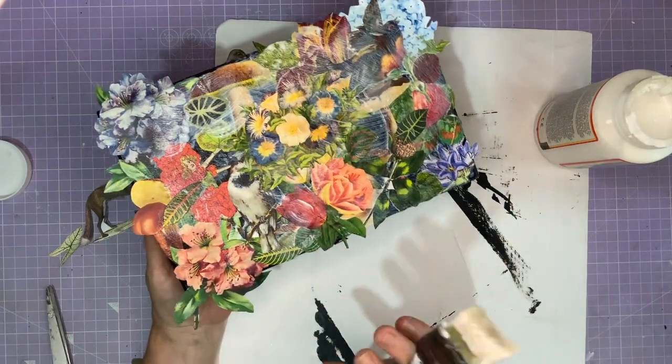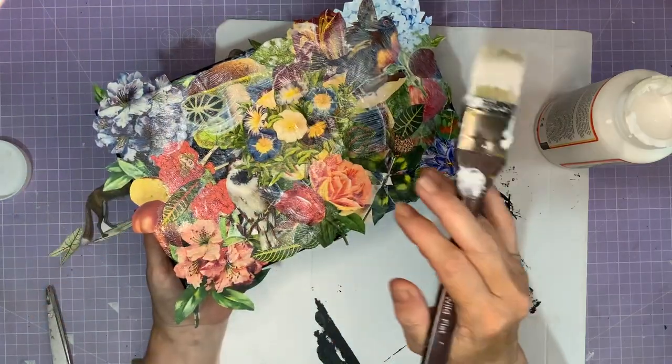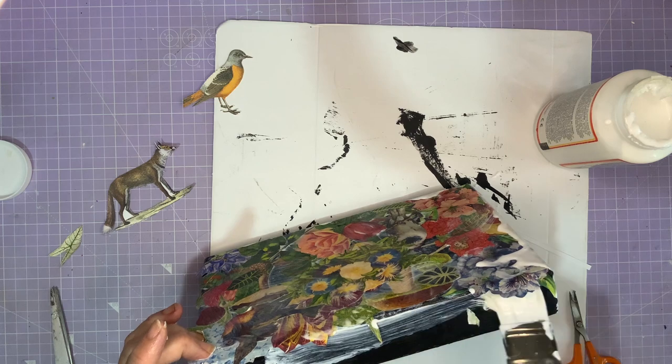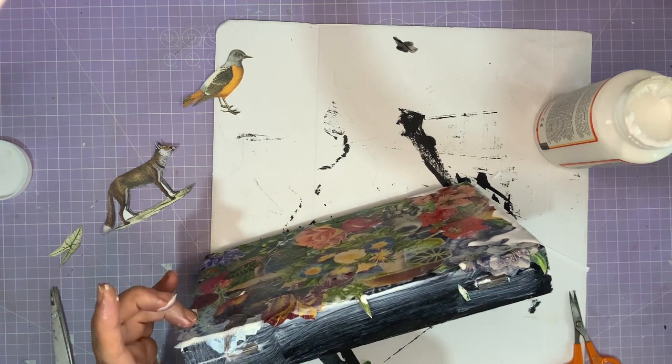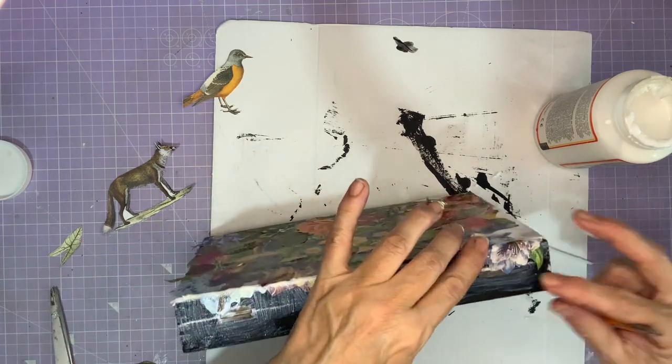And now you can see the advantage of painting black first because there are some spaces. I don't want to cover this girl's hands in and it's the only way to avoid having the box showing unless it's painted black. Now with these ones that are hanging over the edge, you have two options. You can cut them off, but I like to drape them around the edges.